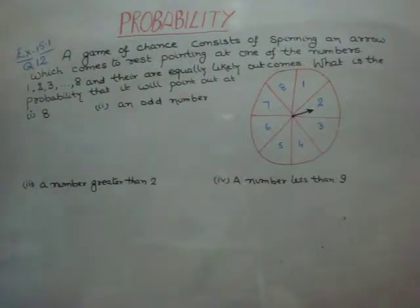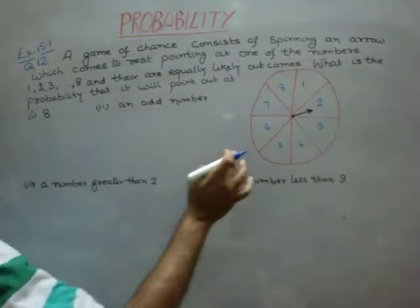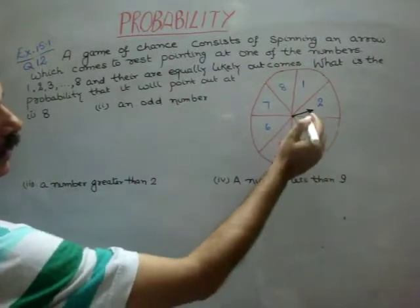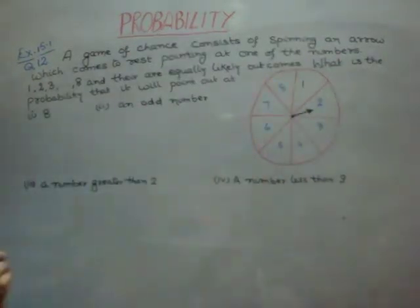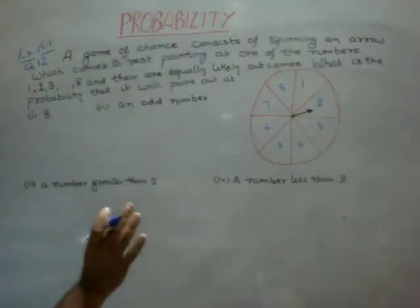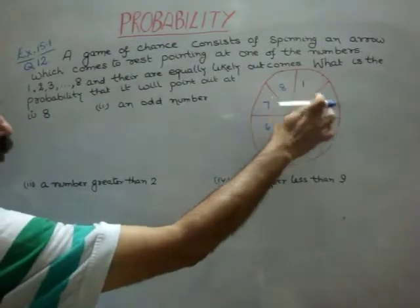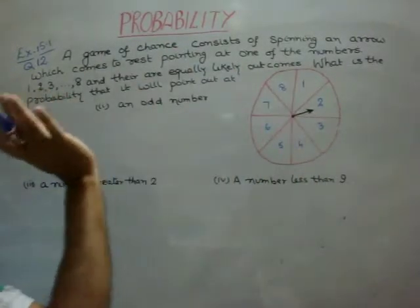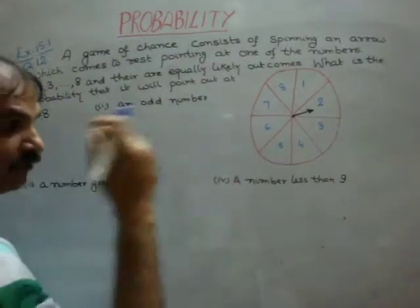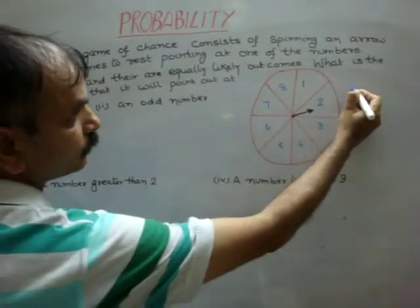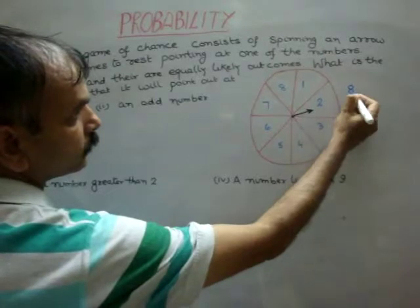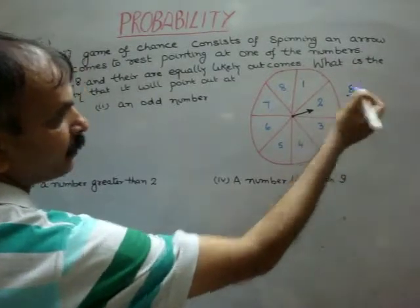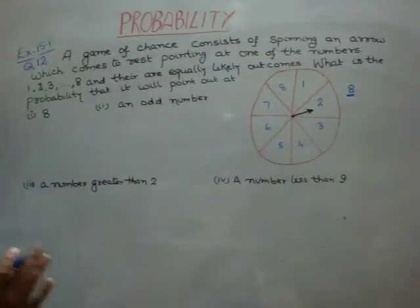So you will see what we have. By the way, this is spinning and this is the arrow. Okay? Now, what is the numbers? How many are the numbers? 1, 2, 8. That is, the total numbers are, or total events are 8. How many are the total events? 8.